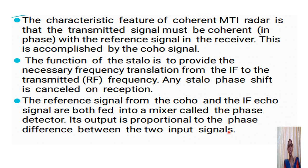FC plus or minus FD is given to the IF amplifier and phase detector — we do not employ amplitude limiters. The reference from the coherent oscillator is again applied to the phase detector, so FC cancels and the output contains only FD, the Doppler frequency information, which is supplied to the delay line canceller.